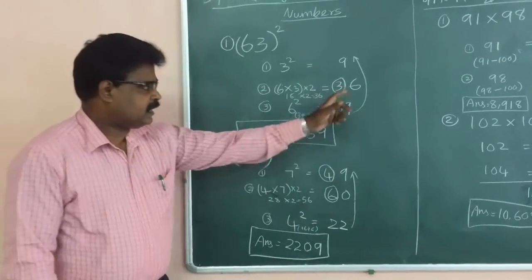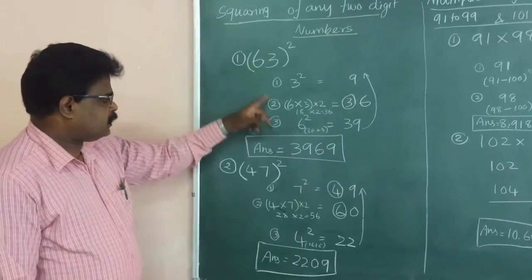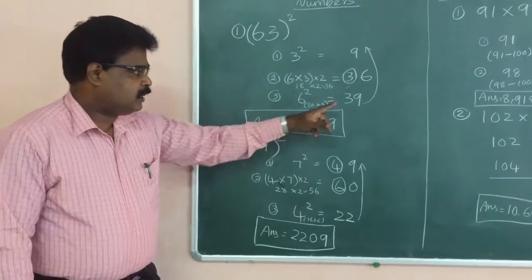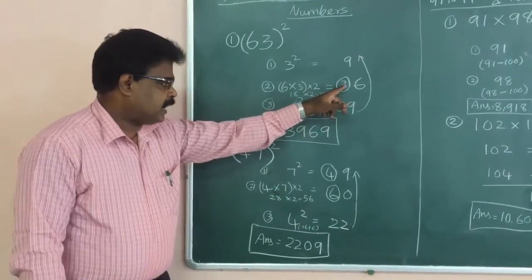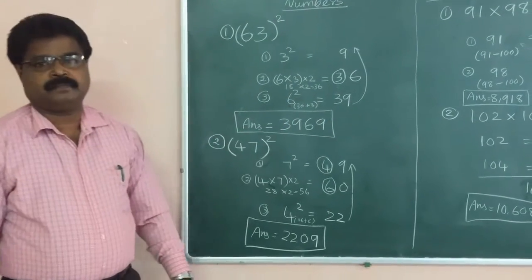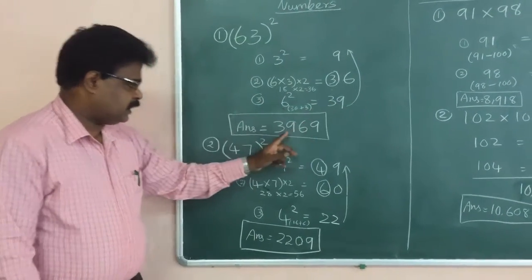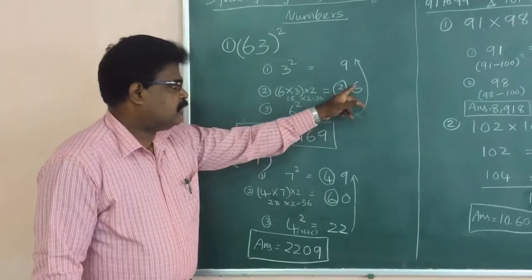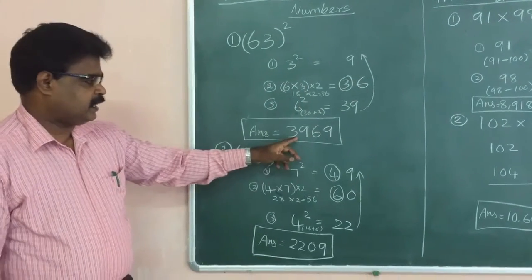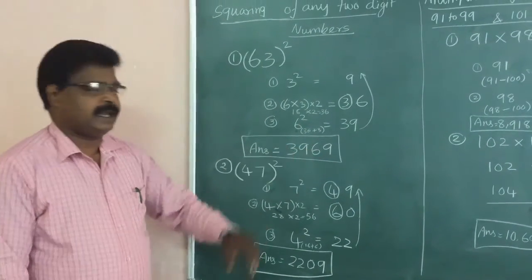Here the 3 is a carry. Next, you square 6: 6 squared is 36. Add the carry — 36 plus 3 equals 39. Then you write 39, then 6, then 9. So the final answer is 3,969.